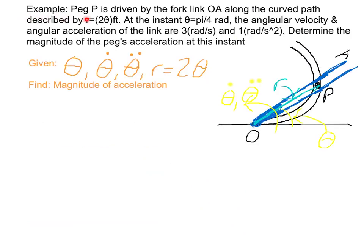Now an example. Peg P is driven by the fork OA along a curved path described by r equals 2 theta. At the instant where theta equals pi over 4 radians, the angular velocity is 3 radians per second and the angular acceleration is 1 radian per second squared. We need to determine the magnitude of the peg's acceleration at this instant.